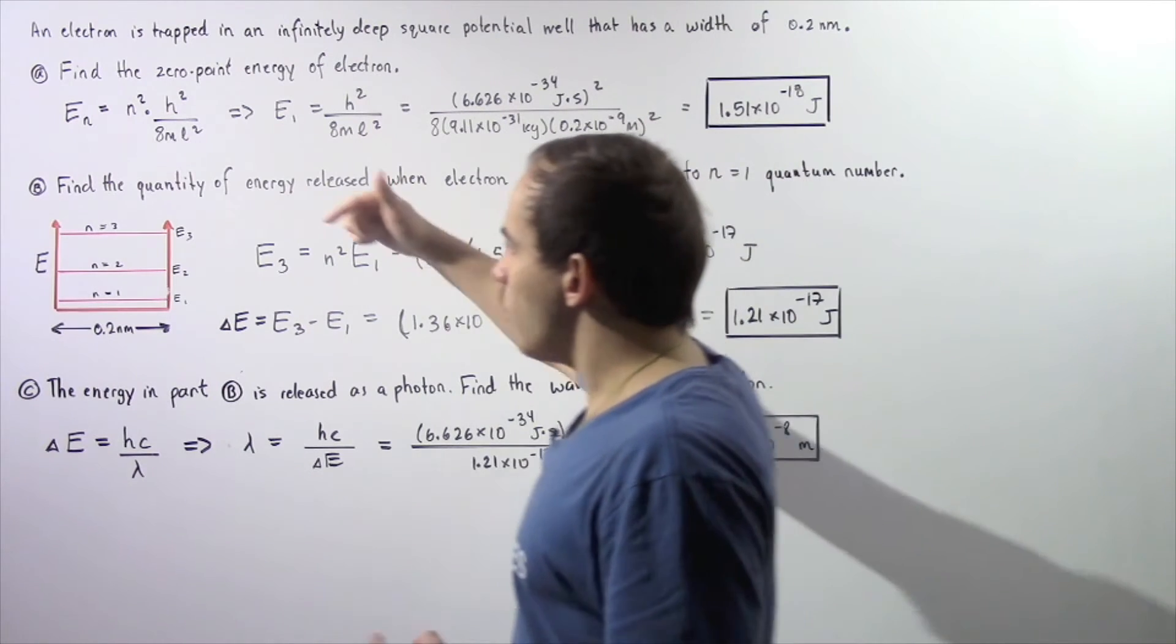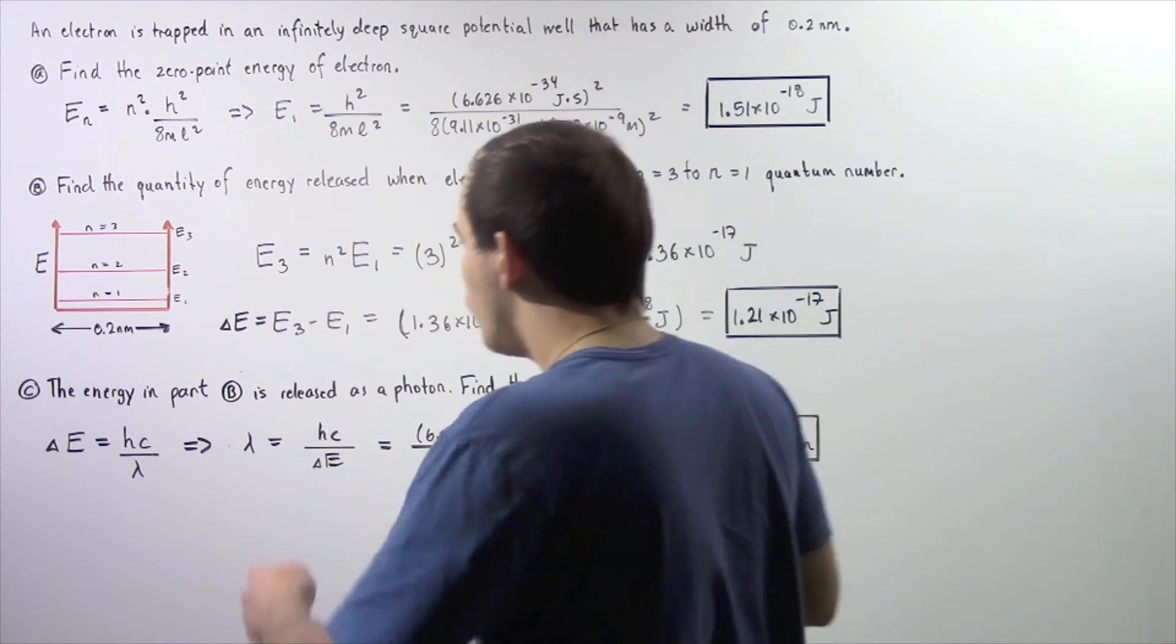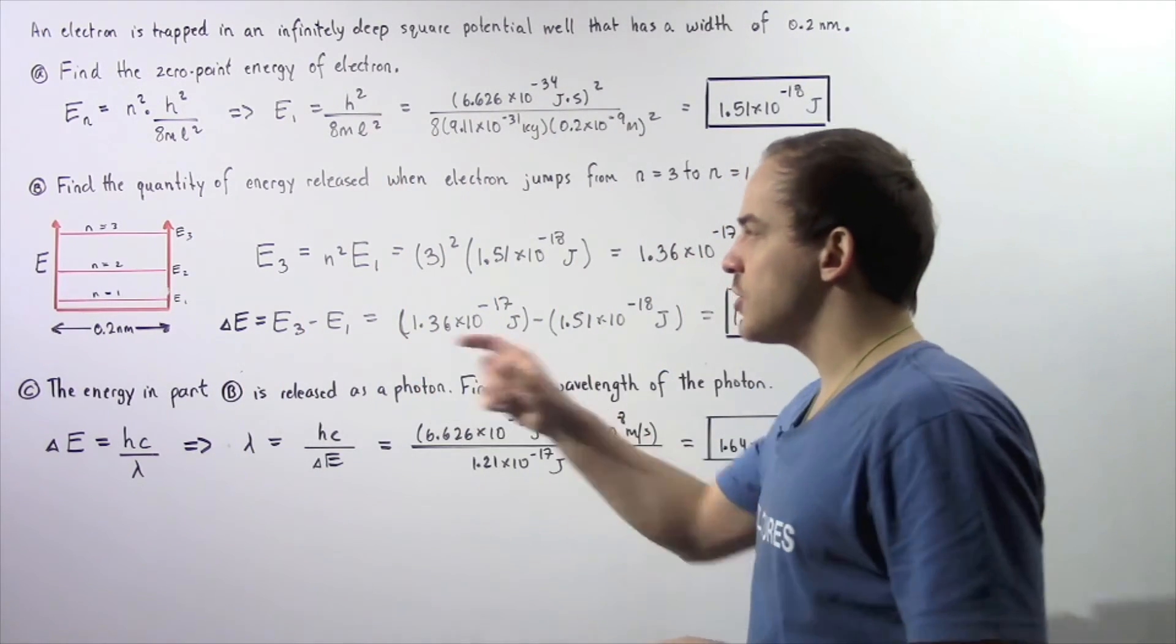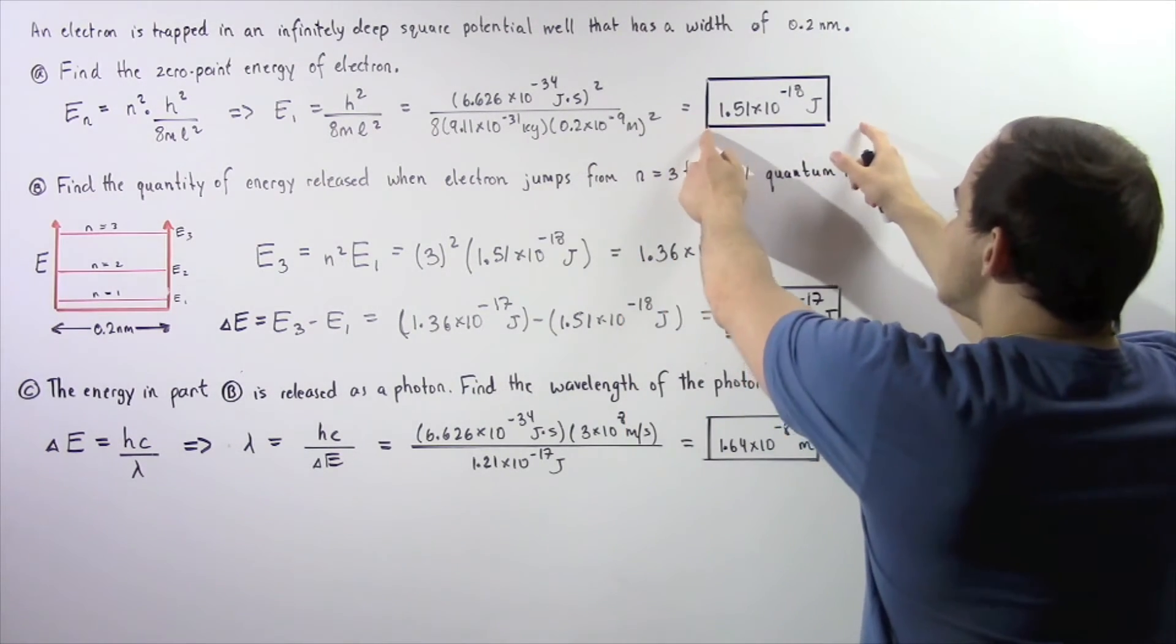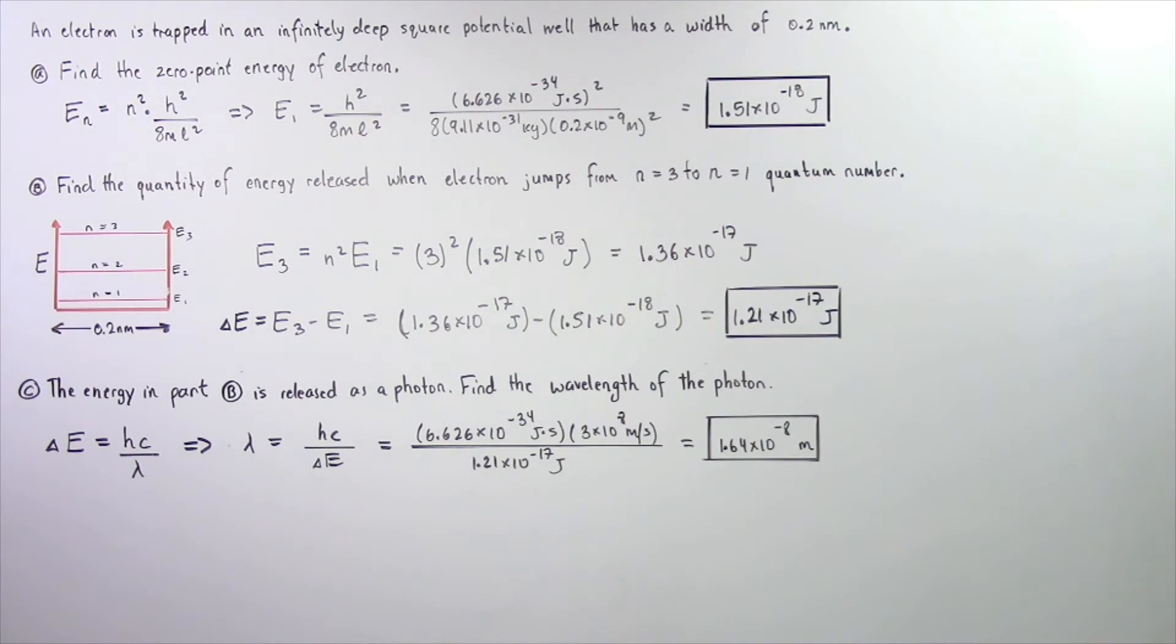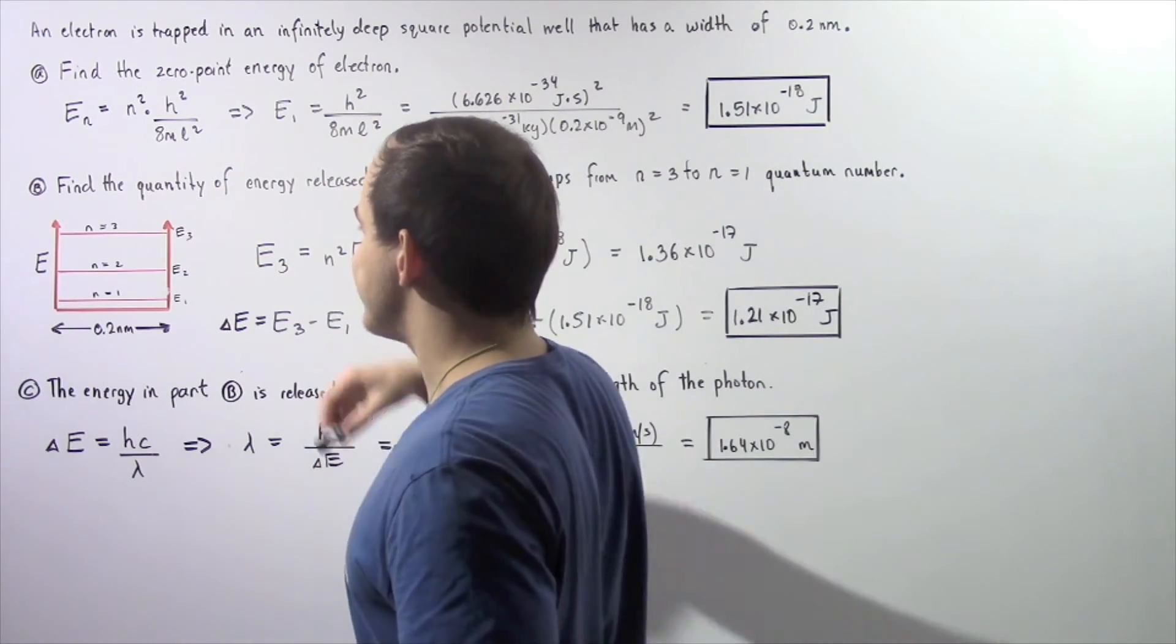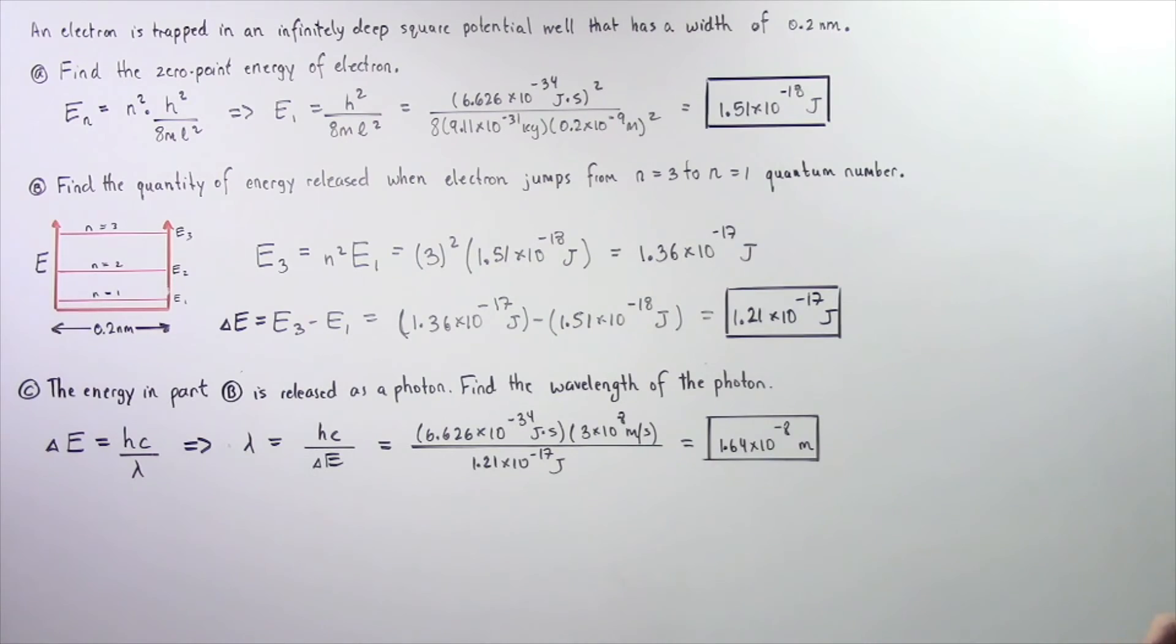Now we know what this is, and we know what E1 is. To find this difference, we simply subtract. So, change in E is equal to E3 minus E1. This quantity minus this quantity gives us about 1.21 times 10 to negative 17 joules of energy is released when that electron transitions from n equals 3 to n equals 1 quantum number.